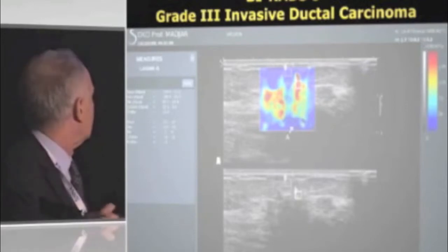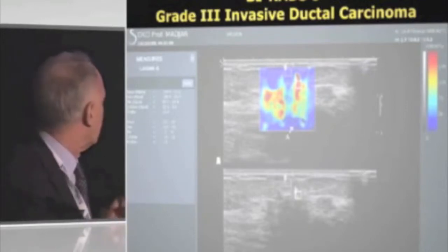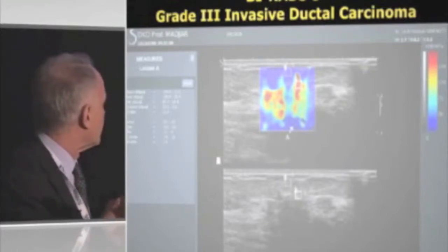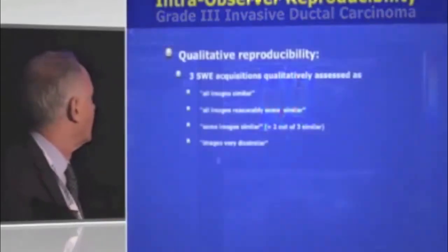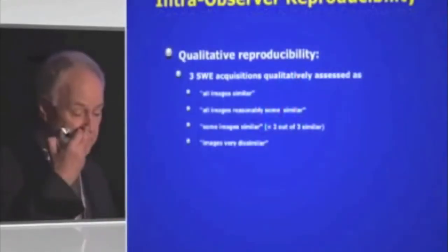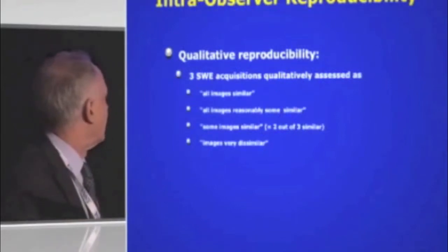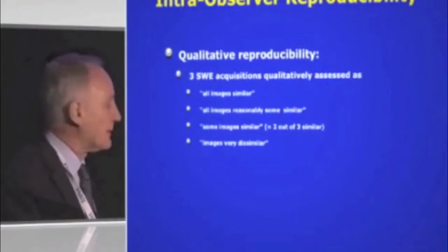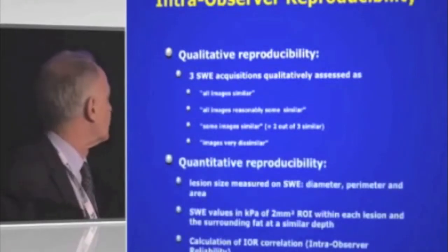The readings come up on a scale on the side, so you can read off the values of the ROI box within the stiffest part of the lesion and the adjacent fat. The first thing we wanted to examine was reproducibility, looking at both qualitative and quantitative scores.